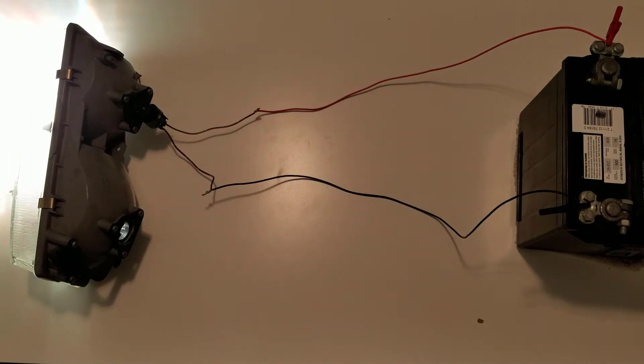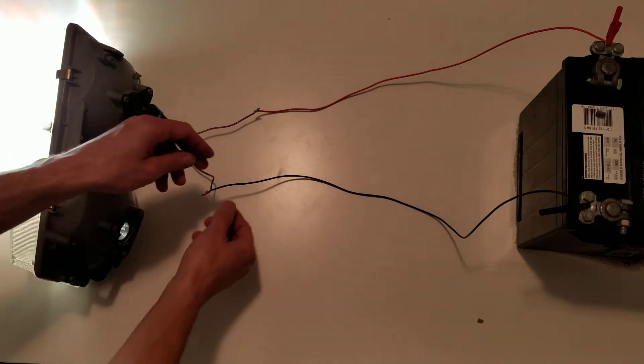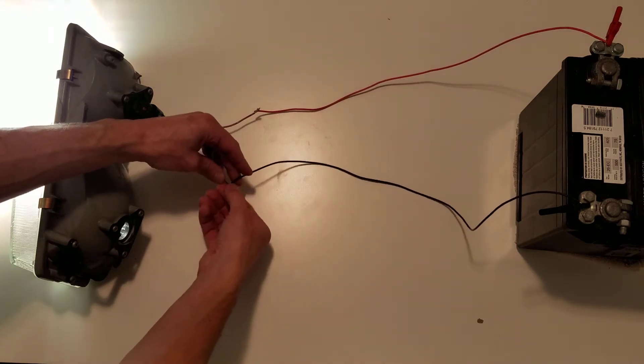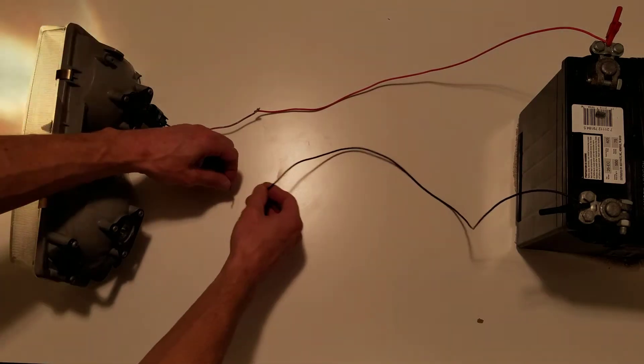So we can see that our headlight is working. And now what I'm going to do is I'm going to introduce high resistance into this circuit. So I'm going to untwist my negative side.